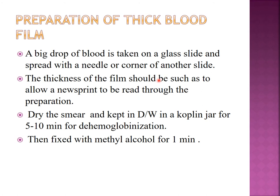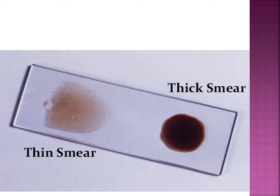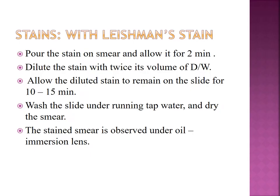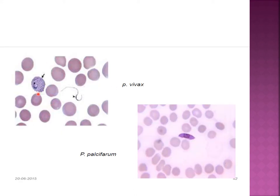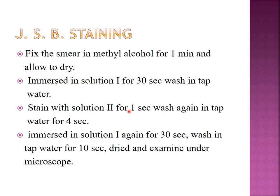Thick blood film can also be prepared; if the number of parasites is low, they can be seen in thick blood film. Dehemoglobinization of thick smear is done before staining. Peripheral blood film is stained by Leishman stain, Giemsa stain, or Field's stain (GSB stain). Plasmodium vivax and gametocyte of Plasmodium falciparum can be identified. GSB staining can be done in the field for identification of malaria parasites, showing ring forms inside RBCs, which are trophozoites.